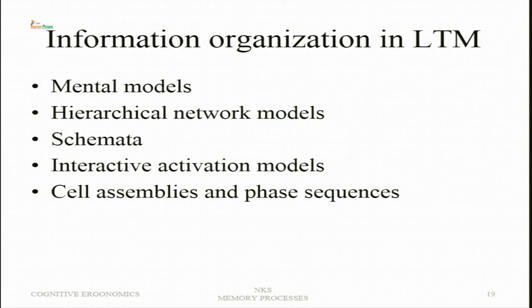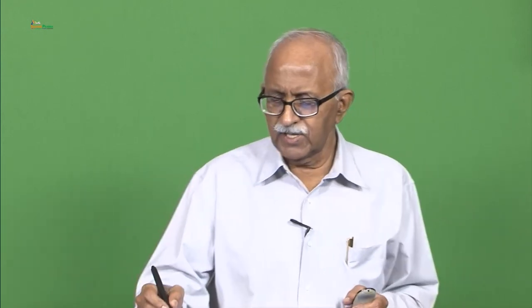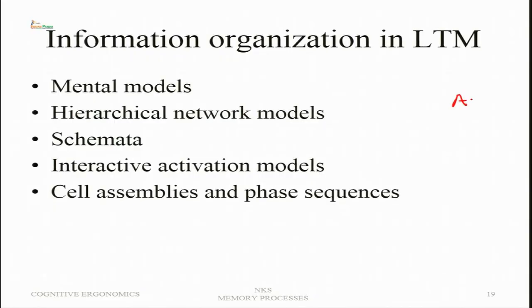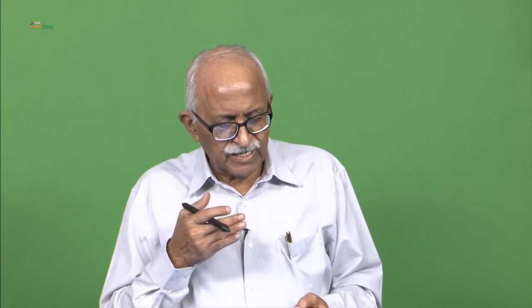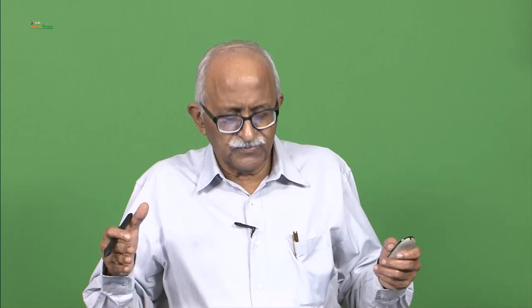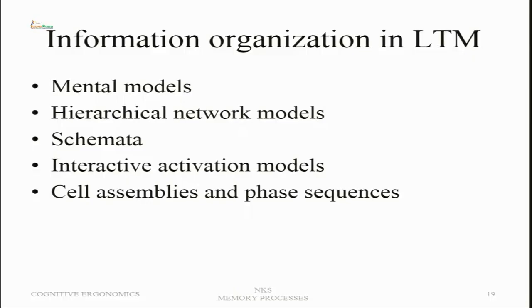Cell assemblies and phase sequences have a physiological basis. Neural cells get activated when a small piece of information is present — for example, the letter A activates a cell assembly for A, a cell assembly for N, and a cell assembly for D. With experience, these cell assemblies become interrelated — forming an organization called a phase sequence. If only one cell assembly is triggered later, the entire phase sequence is triggered, and this is how recognition occurs.